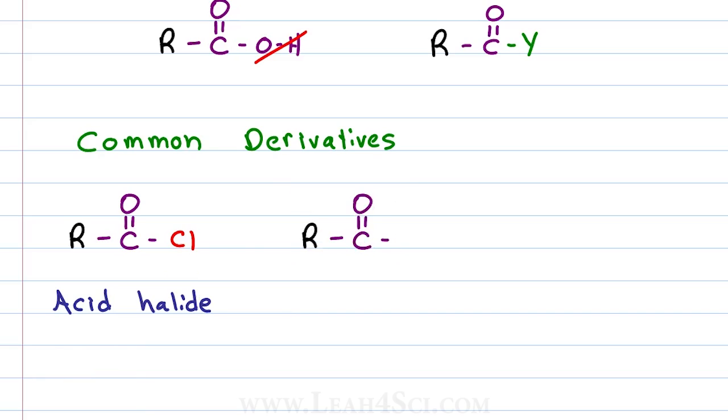If I replace the OH with what looks like another carboxylic acid without the hydrogen, so we'll just have this portion here giving us an oxygen, a carbon double bound to an oxygen and then the second R group, this is called an acid anhydride or simply anhydride.